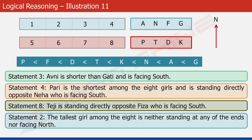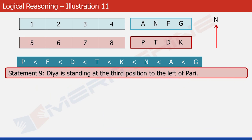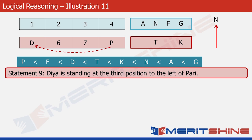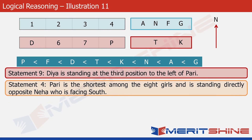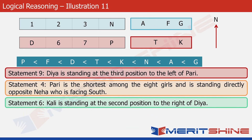Now let's try arranging them in positions numbered one to eight. Statement nine says that Diya is standing at the third position to the left of Pari. The only way in which Pari and Diya can be arranged in this structure is with P at position five and D at position eight — there is no other possibility. Statement four tells us that Pari is standing directly opposite Neha, and the position directly opposite Pari is four, so Neha has to occupy position four. Statement six says that Kali is standing at the second position to the right of Diya — that's position seven — so let's write K at position seven.